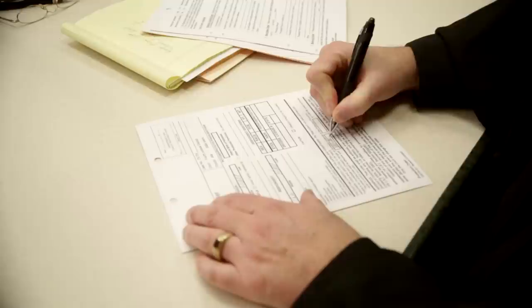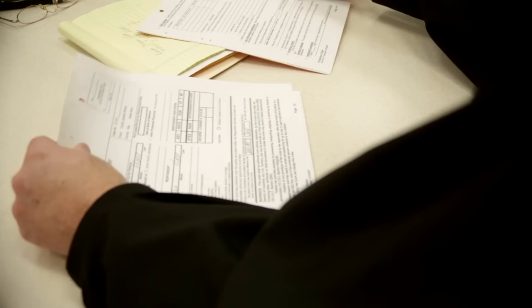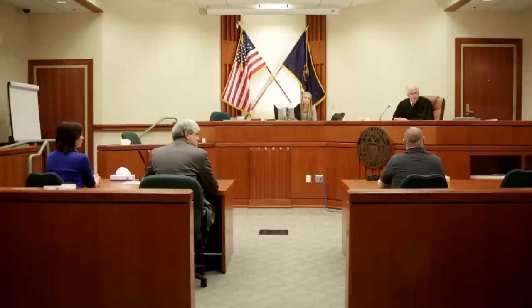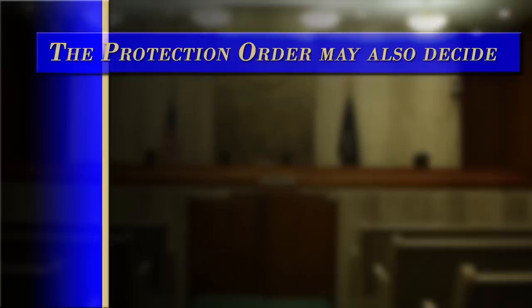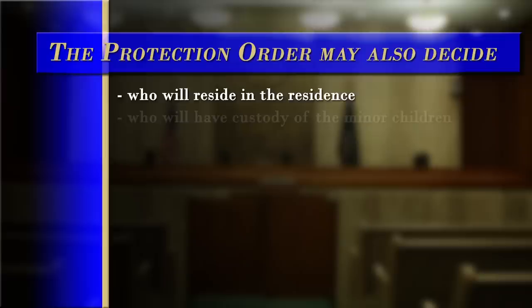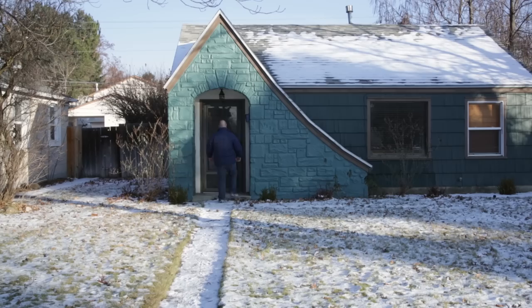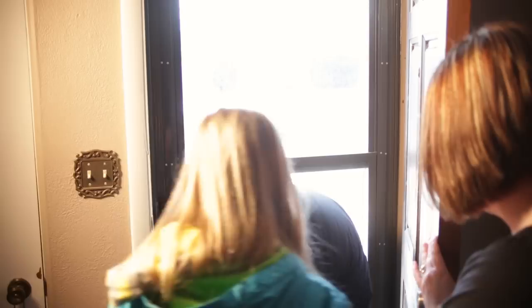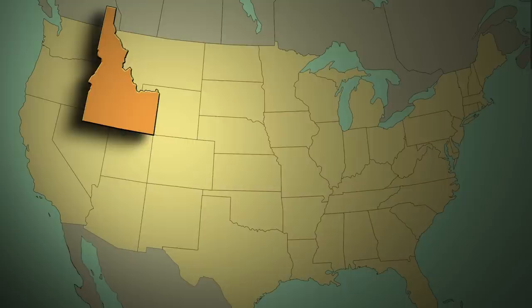After hearing all of the evidence, the judge will decide if your situation requires a protection order. If a protection order is granted, it will be in effect for the period stated in the order, possibly up to one year. The protection order must be followed by both parties — neither of you can have contact with the other unless specific exceptions are made, such as through a third party, by telephone, or by mail. Any modifications must be approved by the court and a written court order issued even if you and the respondent are in agreement. The protection order may also decide on a temporary basis who will reside in the residence, who will have custody of the minor children, and how visitation will be structured.